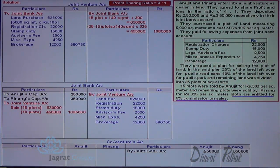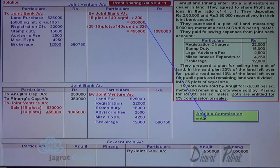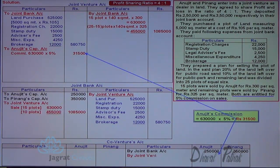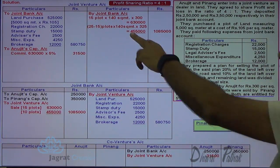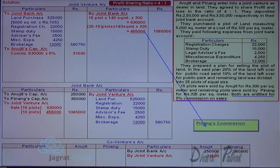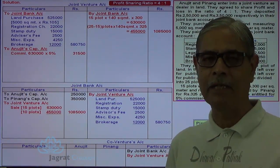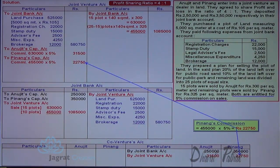Both are entitled to 5 percent commission. Those who sold the plots — the sales value thereof is applied with the percentage for commission. Commission for Anujit: 6,30,000 × 5% = 31,500. It is an expense for joint venture business, and the amount is to be given to Anujit for services rendered — joint venture account debit to Anujit capital account credit. Similarly, commission for Penang: sales revenue fetched by Penang is 4,55,000 × 5% = 22,750. This commission is an expense of joint venture business — debited to joint venture account and Penang's capital account is credited.